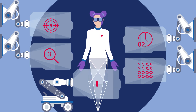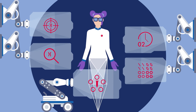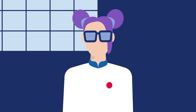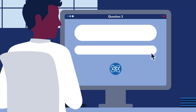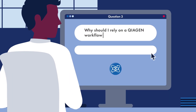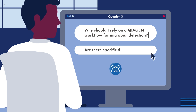And multiplexing of up to 5 targets, with the possibility of detecting viral RNA and microbial DNA together. I find this final question very interesting. Question 3: Why should I rely on a Qiagen workflow for microbial detection? Are there specific dPCR assays?